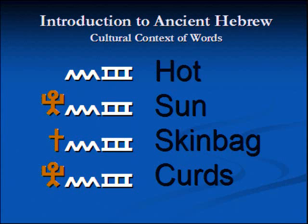They all come from the same parent root: cham — chet, mem — is the parent root. The other three are child roots, and they all have those letters in common. But what do the actual definitions have in common?